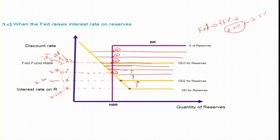When the Fed increases the interest rate on reserves, the horizontal portion of the demand curve shifts upward; if they reduce it, the horizontal portion shifts downward. We have seen that the three tools of monetary policy — open market operations, discount rate, reserve requirement changes, and changes in the interest rate on reserves — can all be used by the Fed to influence the Fed fund rate.